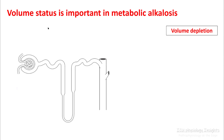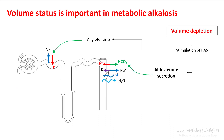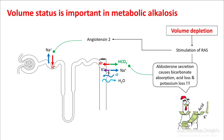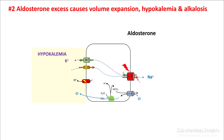Understanding volume status in metabolic alkalosis is of primary importance. With volume depletion you stimulate your renin-angiotensin system, resulting in production of angiotensin 2 and aldosterone. Angiotensin 2 stimulates proton secretion in the proximal convoluted tubule in exchange for sodium ion, and aldosterone works in the collecting duct with excretion of hydrogen ion and exchange of sodium and potassium. Aldosterone also stimulates sodium-potassium ATPase, resulting in loss of potassium and absorption of sodium, and water absorption as well.